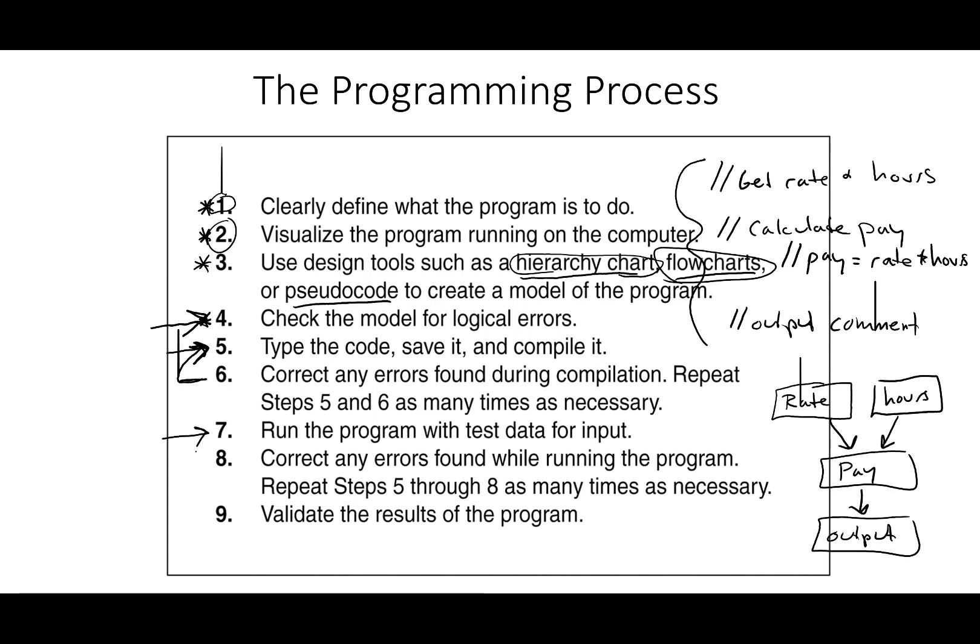What I mean by this is, let's say that we put in zero for the rate. We know that zero times anything is zero. So if we put in zero for the rate, we know that we should get zero for the pay. If you put in zero for the rate and you don't get zero for the pay, you know that there's something wrong. So you're going to have to go back and check your model and figure out what's causing the problem.